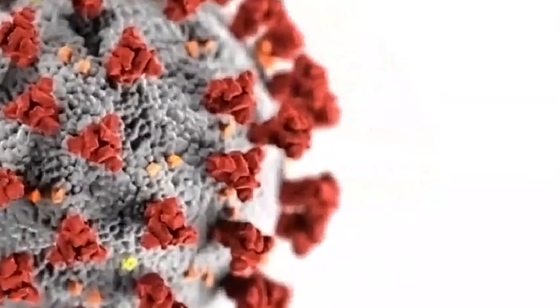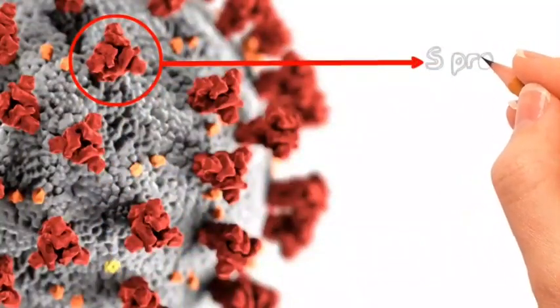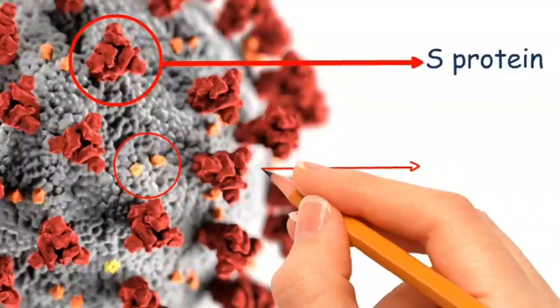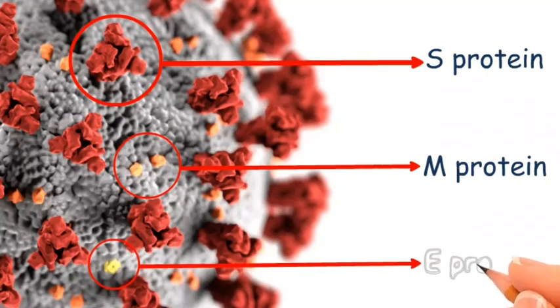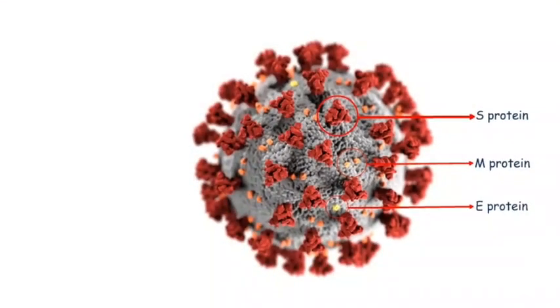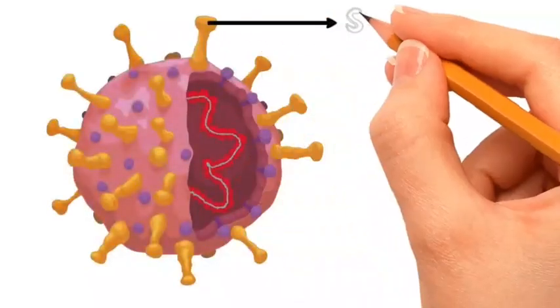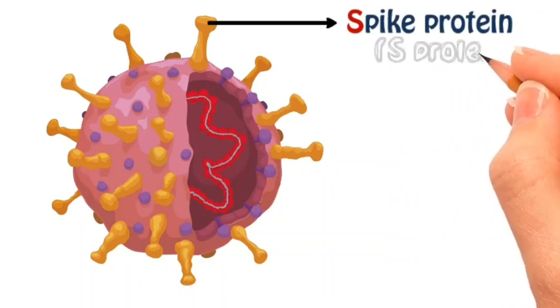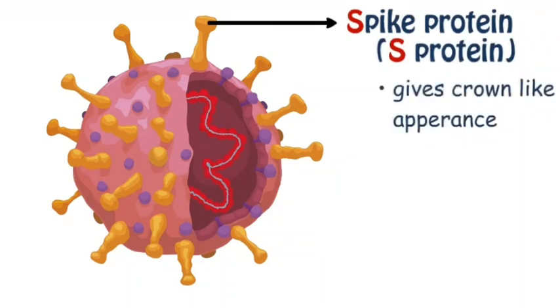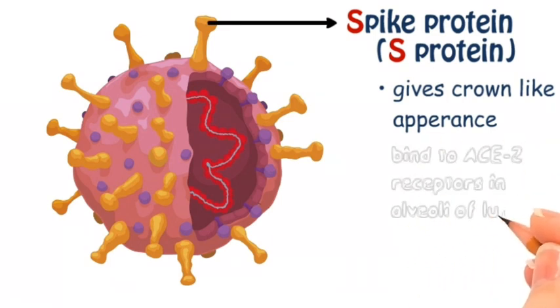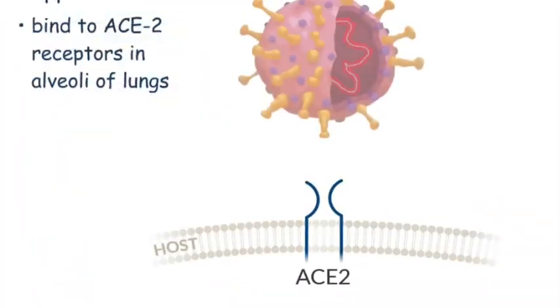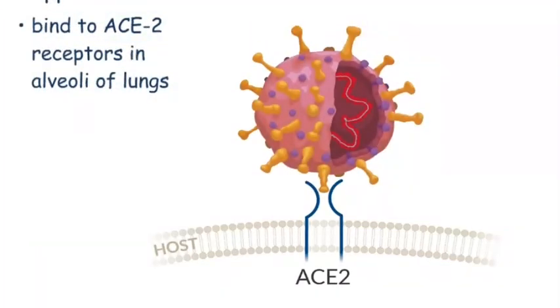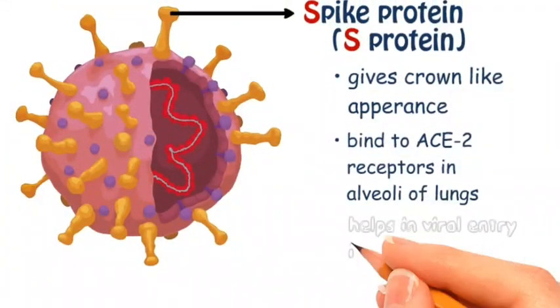The proteins found on the surface of the virus include the S protein, M protein, and E protein. The spike protein, or S protein, gives the virus a crown-like appearance. It helps in binding to the ACE2 receptors, which are present in the alveoli of the lungs, and thus helps in viral entry into the host cell.